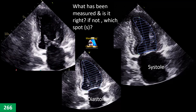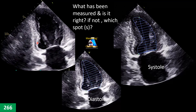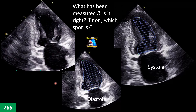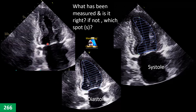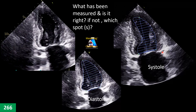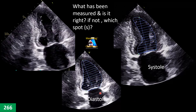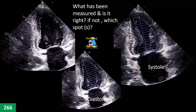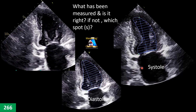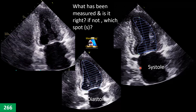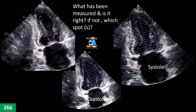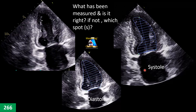Let's do it. Here is a patient — apical two-chamber view. The tech has done tracing on the diastole and systole. Are any of them correct or wrong? If wrong, what is the correct way and how can we fix it?